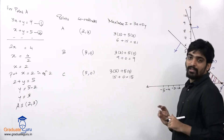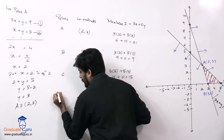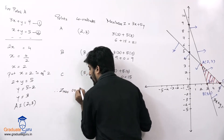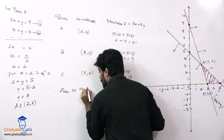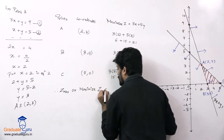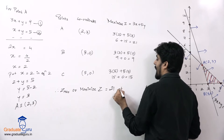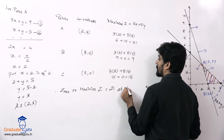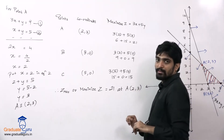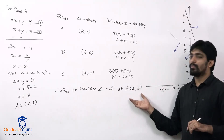So the values are 21, 9, and 15. The maximum value is 21. Therefore, the maximum Z is equal to 21, attained at point A which is (2, 3). Make a note of this part — this question is done.